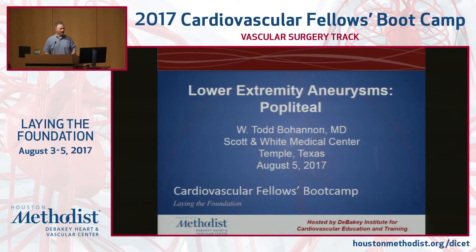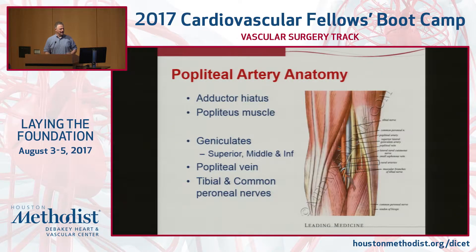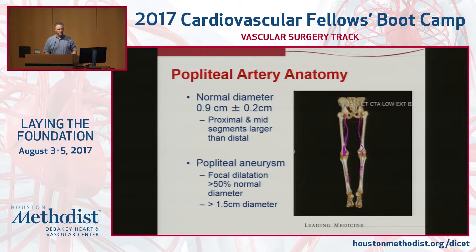We're going to talk about lower extremity aneurysms and particularly popliteal aneurysms, which are the most common. In anatomy labs you can look at all these structures in the popliteal fossa, though line drawings are a lot easier than seeing them in situ. The popliteal normal diameter is approximately one centimeter, with the proximal and mid segments a little larger than the distal. We consider a popliteal aneurysm to be a focal dilatation of about 50% of the normal diameter — roughly about one and a half centimeters in diameter.